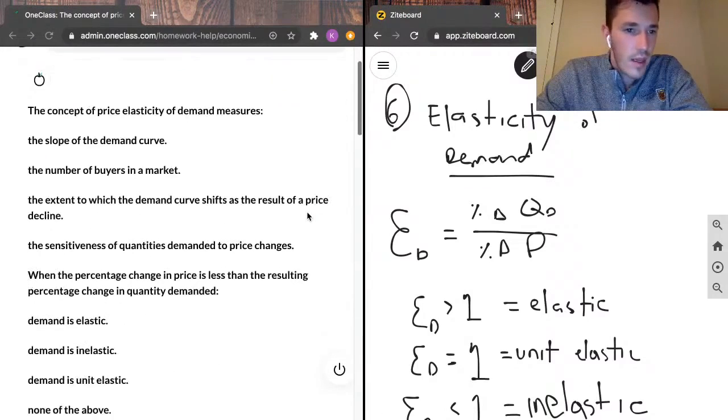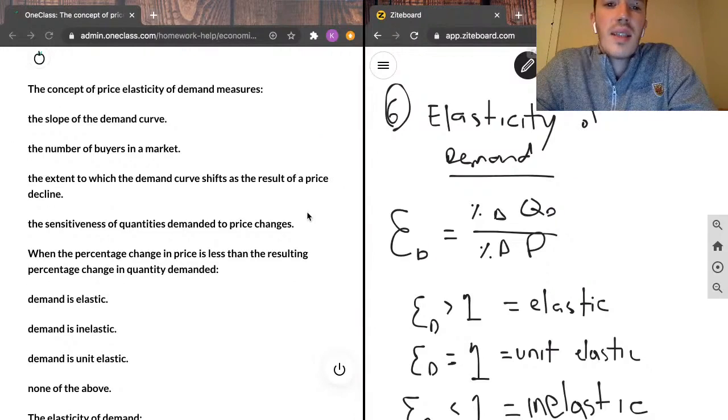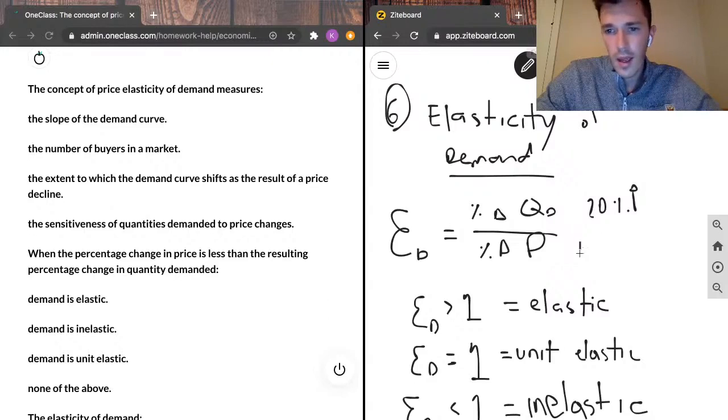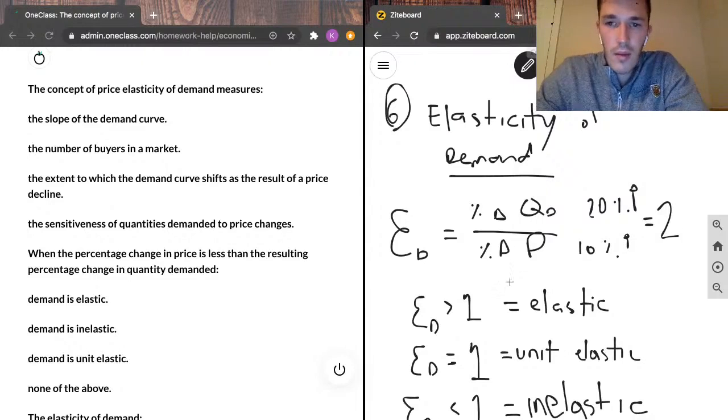So for example, percentage change in price is less than the resulting percentage change in quantity demanded. So let's say quantity demanded goes up 20% and change in price goes up 10%. So we're going to equal 2. And because 2 is greater than 1, we can say that demand is elastic.